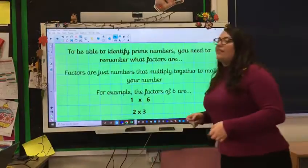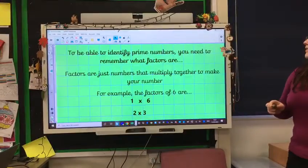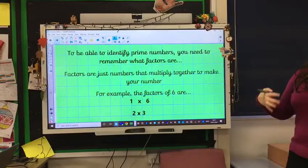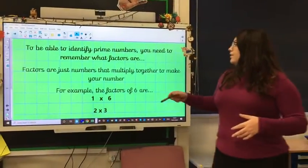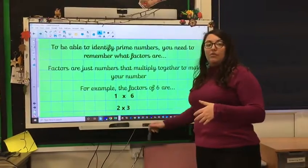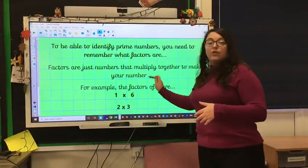So, what we need to remind ourselves first of all is what a factor is. So our factors are numbers that multiply together to make your starter number. So, for example, the factors of 6 are 1, 6, 2 and 3 because they can multiply together to make your starter number 6.